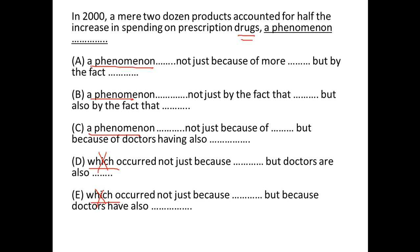Also, this is the pattern in GMAT. When you have a noun versus which — like here 'a phenomena' is a noun, and in D and E we have 'which' after the comma — in GMAT we always prefer a noun over 'which.' Otherwise also, 'which' cannot refer to prescription drugs. So eliminate D and E.